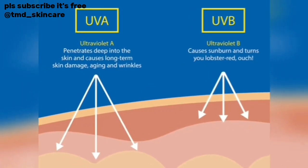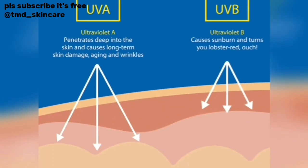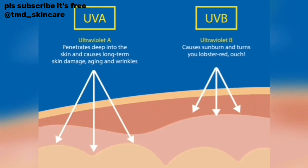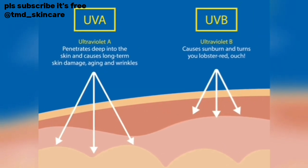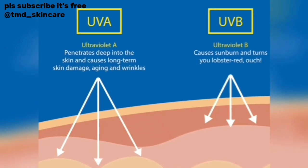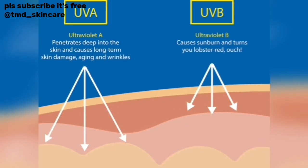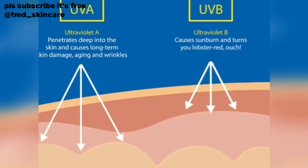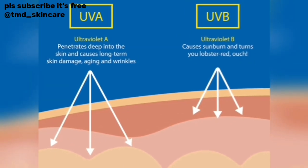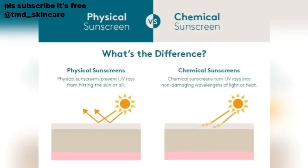There are two types of UV rays that can cause damage to your skin: UVA and UVB. UVA can penetrate into your skin and cause long-term damage like aging, wrinkles, and sagging of the skin, while UVB majorly contributes to sunburn and redness of the face. So you can see that both types of ultraviolet radiation can cause damage to your skin.